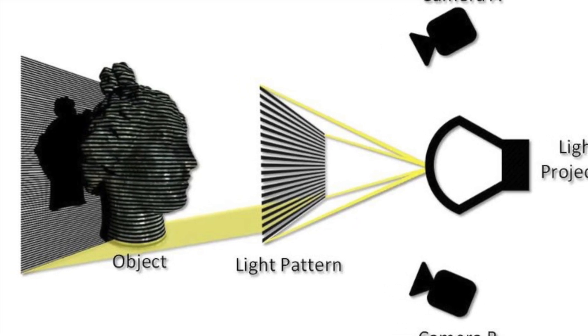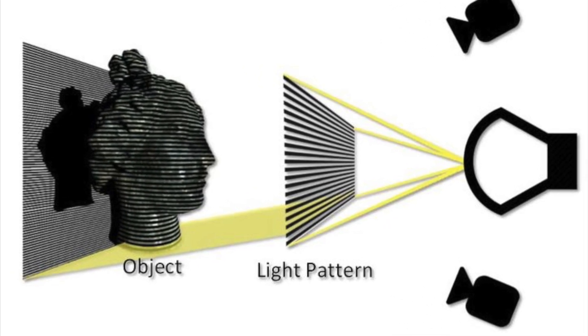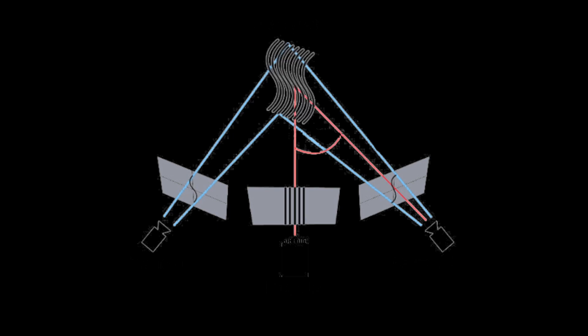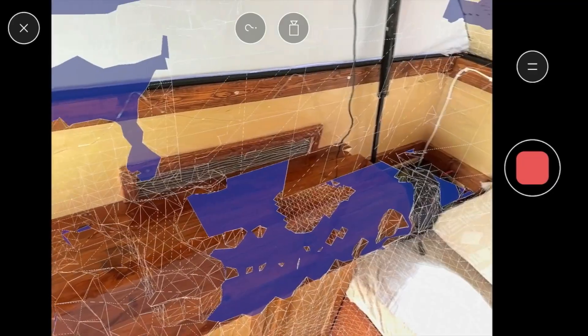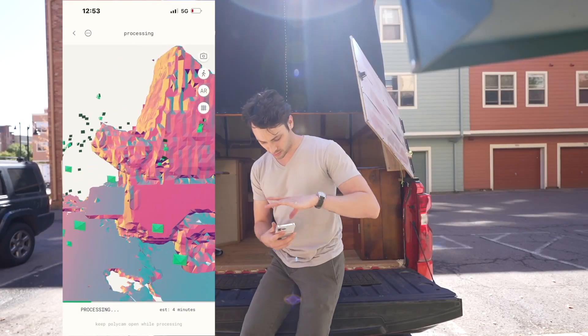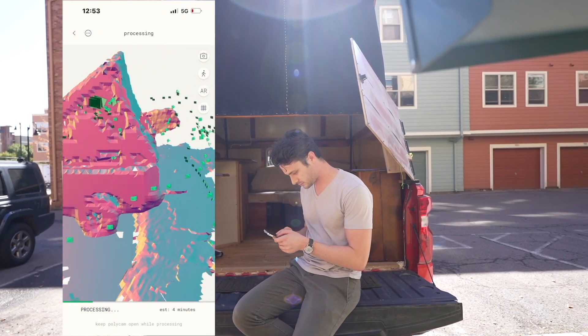While the object rotates, two different cameras pick up a light pattern projected on the target from two different angles and then are able to reconstruct the geometry. This differs from the point-based LiDAR scanning of the iPhone Pro and promises an order of magnitude better resolution.